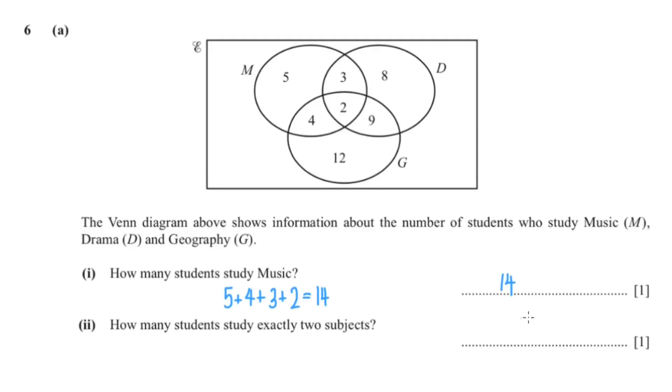So our answer is 14. How many students study exactly 2 subjects? So it's this one, this and this one. That would be 3 plus 4 plus 9 giving us a total of 16. So there are 16 students who study exactly 2 subjects.